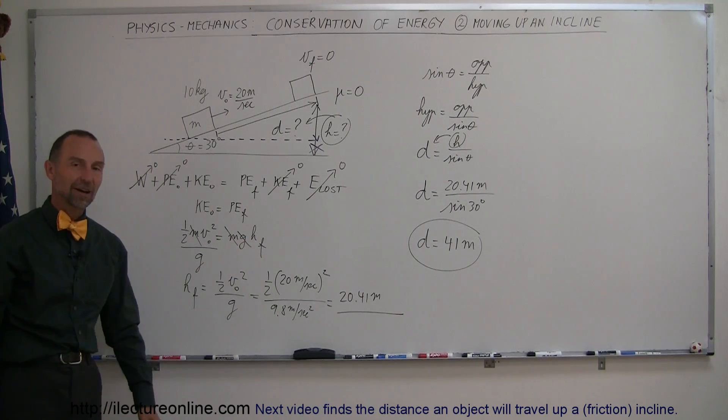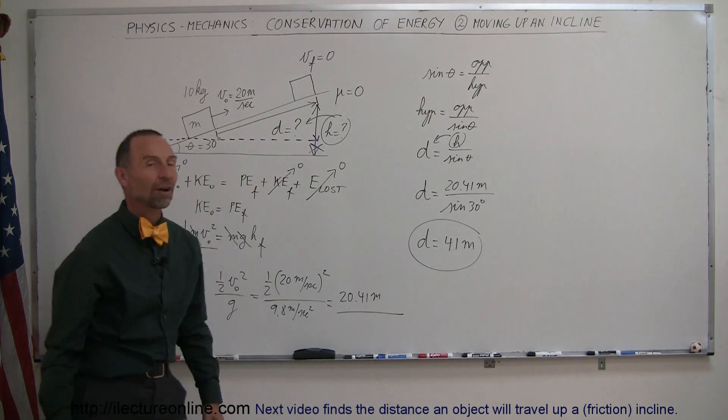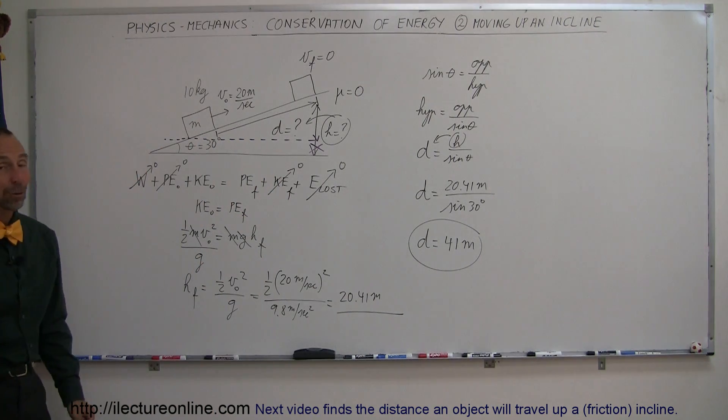And whatever is left over, solve that for the unknown variable, which in this case was the final height, which then is used to find the distance traveled along the incline. And that's how you do a problem like that.